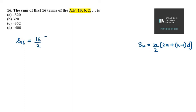It will be 16 over 2, that is N over 2, in bracket 2 into A. A is 10 here, the first term.